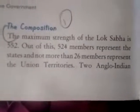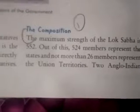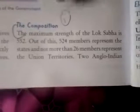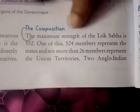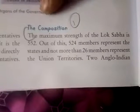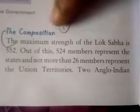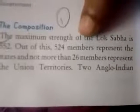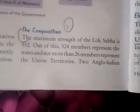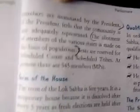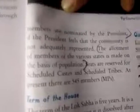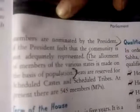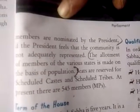Answer the following. The composition of the Lok Sabha. Open page number 110. The maximum strength of the Lok Sabha is 552. Out of these, 524 members are represented from the states and not more than 26 members are represented from the union territories. Two Anglo-Indians are nominated by the president. The allotment of members from various states is made on the basis of population.